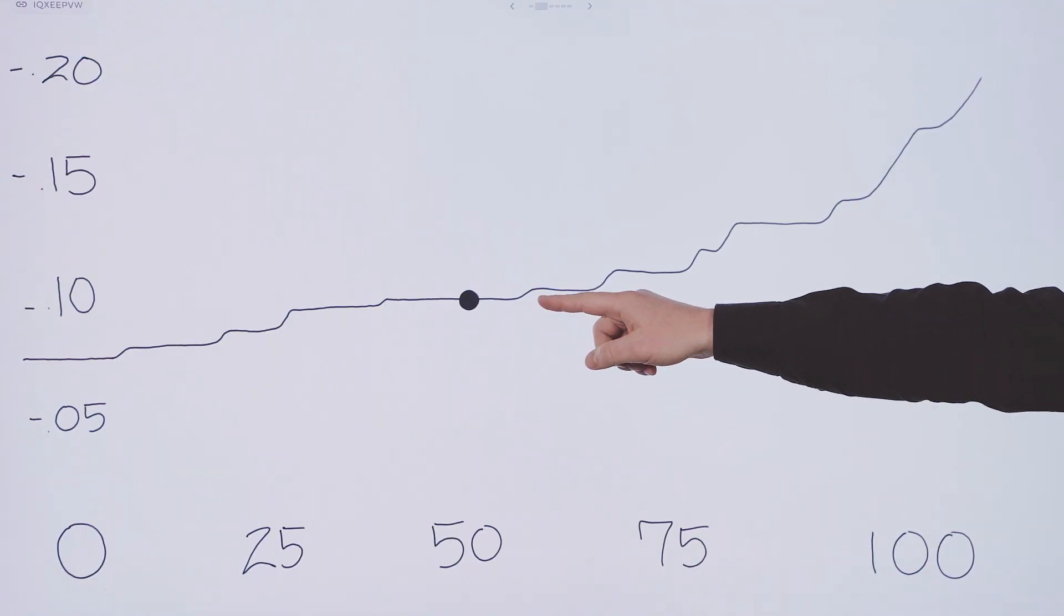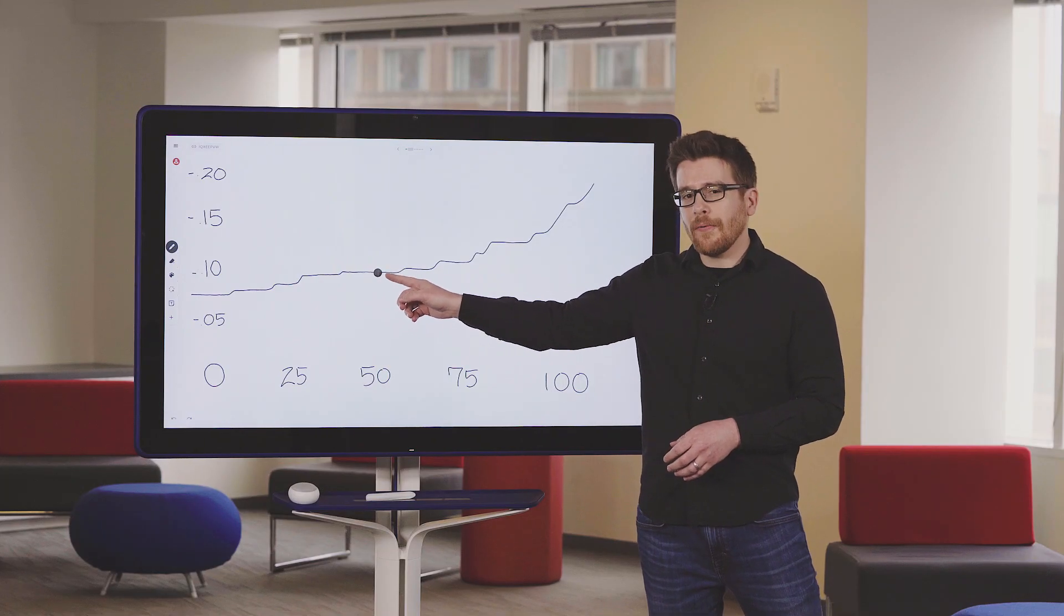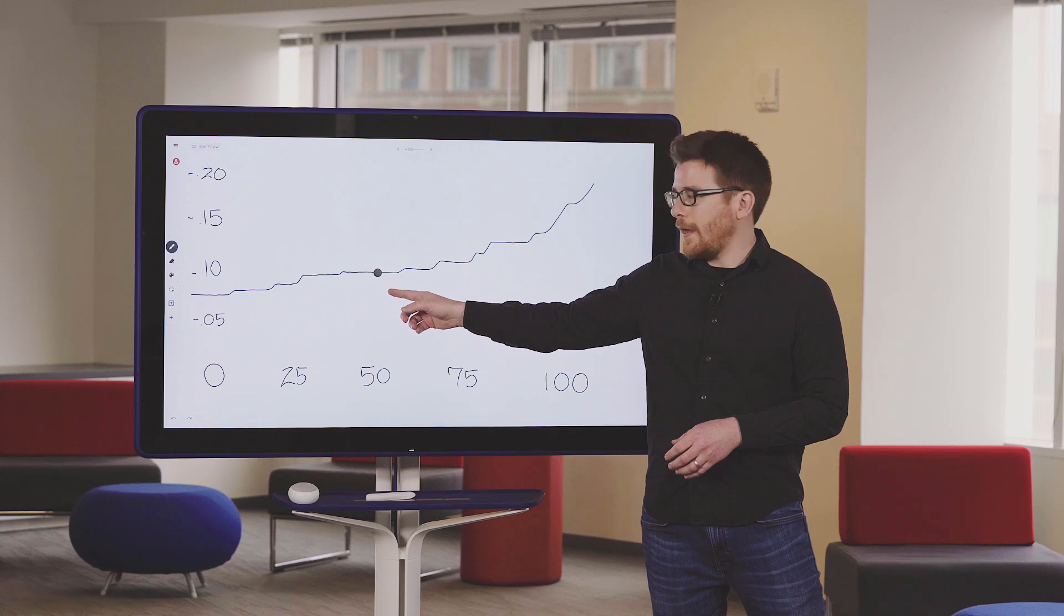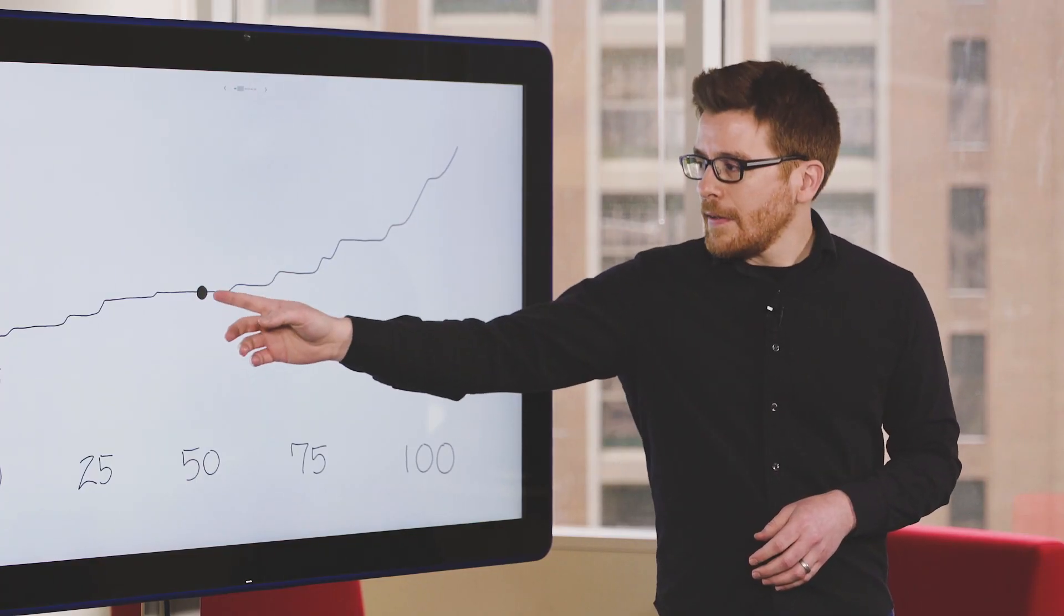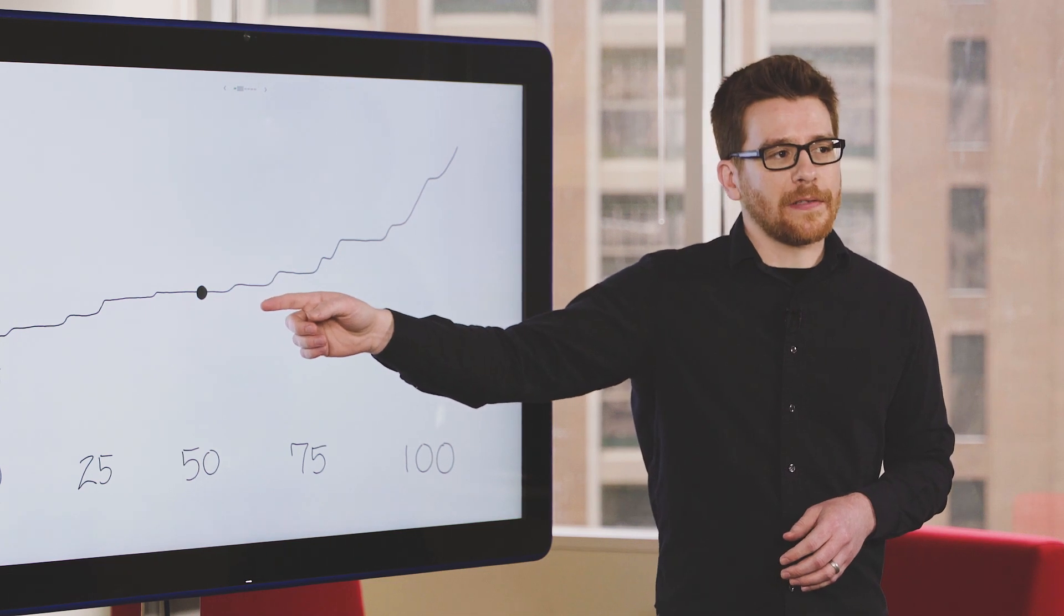Now this specific loan is this dot right here. The person is using about 50% of their credit that they have available, and our predictive model that we've built in DataRobot thinks that they have about a 10% chance of defaulting.